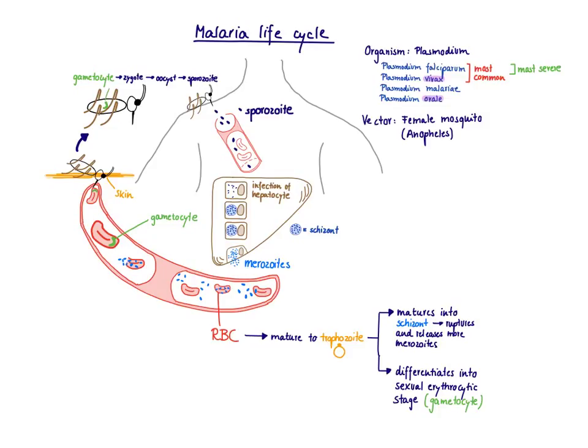How is malaria transmitted? Plasmodium needs a vector. A vector is any agent that can carry an infectious pathogen into another living organism. The vector that carries the Plasmodium species is the Anopheles mosquito.